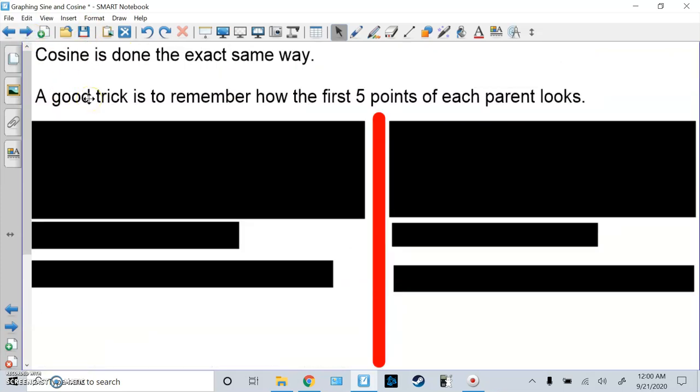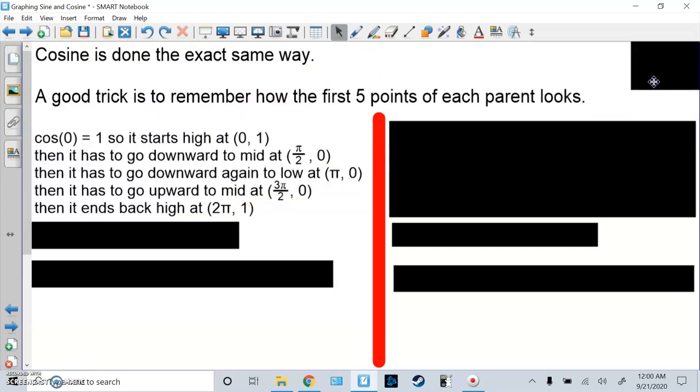Cosine is in the exact same way. I'm not going to do it, it takes a while. But a good trick is to remember how the first 5 points of each parent function looks. But if you think about it, cosine of 0 is 1. So we start high at 0, 1. Then it has to go down towards the middle, because we're in the range, the maximum is 1. So it goes pi over 2, 0. Then it has to go downwards again. It goes downwards again to low at pi, negative 1, because cosine of pi is negative 1.